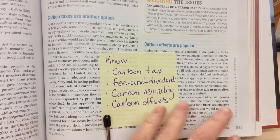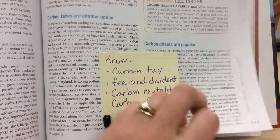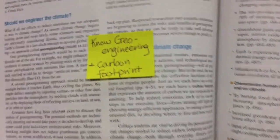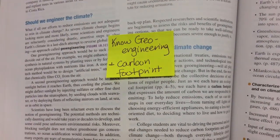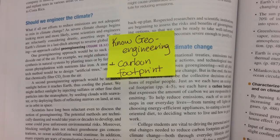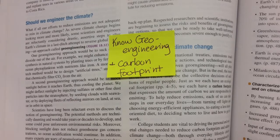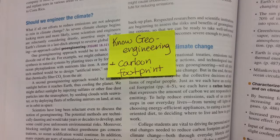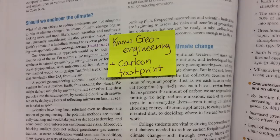On page 514, know the definition of geoengineering and carbon footprint. Geoengineering is another approach to try and suck the carbon dioxide out of the air, and carbon footprint is like our eco footprint but it's just for carbon. That's the end of chapter 18.